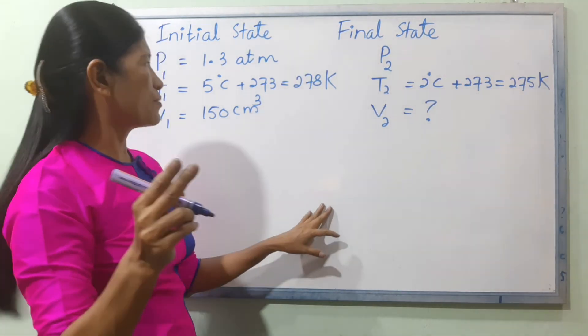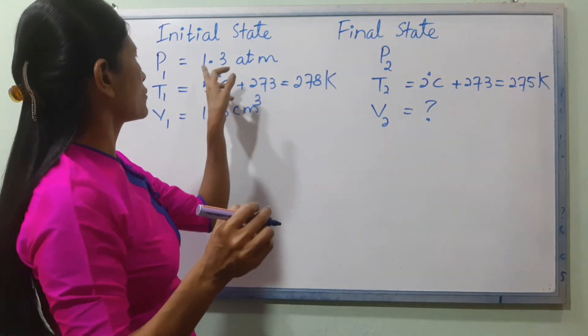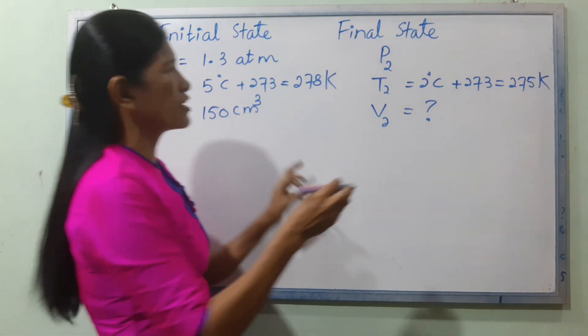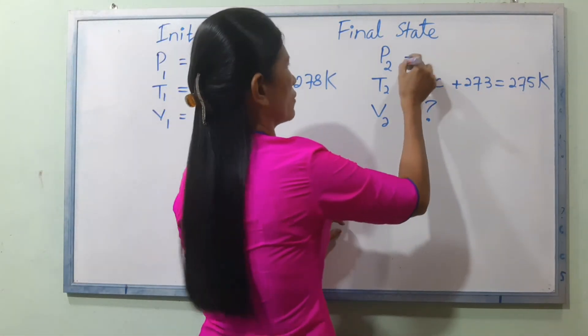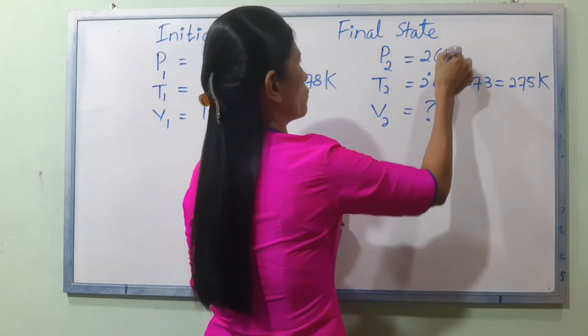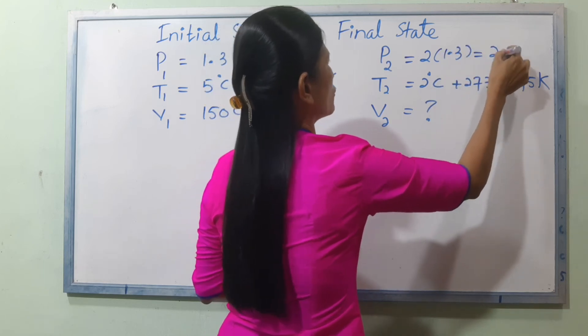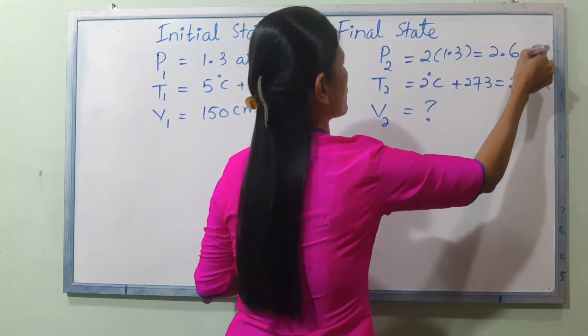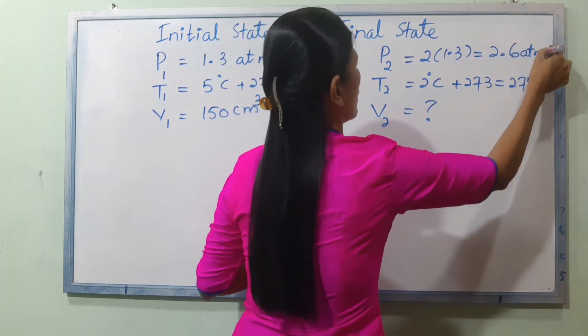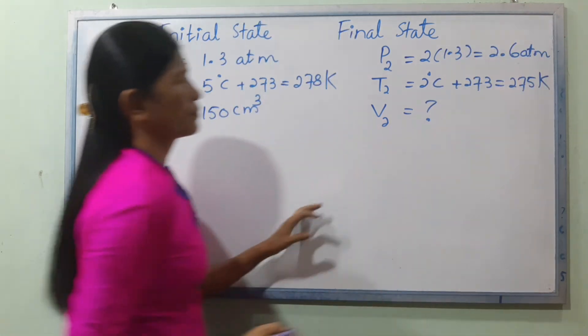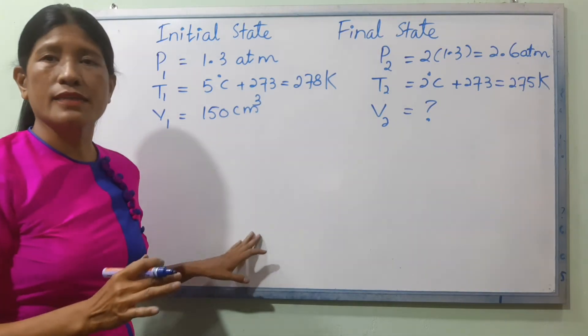Pressure P2: since pressure doubles, P2 = 2 × 1.3 = 2.6 ATM.